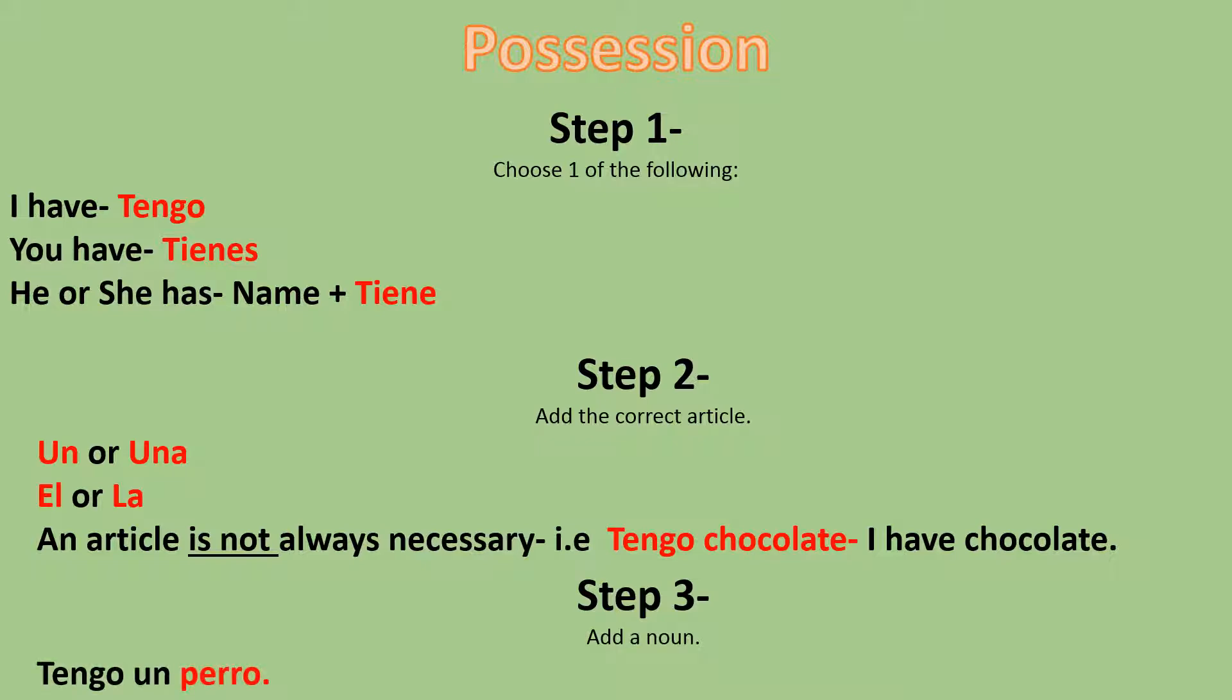Step three: add a noun. Tengo un perro, I have a dog. Or you can say tienes un perro, you have a dog. Or you can say Juan tiene un perro, Juan has a dog. By following these three simple steps, you'll be speaking using possession in no time.